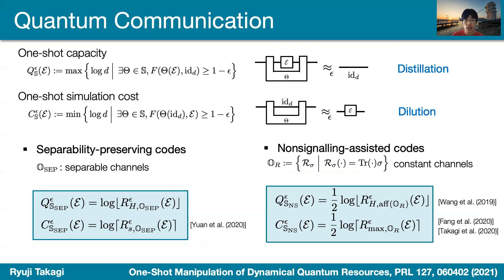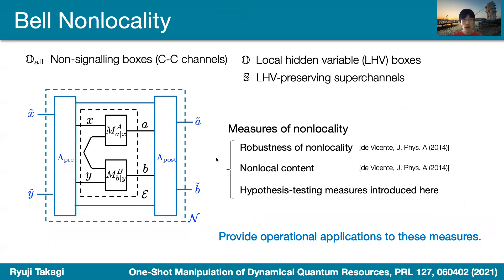Without giving the exact technical details, we can apply that to many situations such as quantum communications. In quantum communications, two figures of merit — the capacity and the estimation cost — are pretty important, and these can be encompassed by the distillation problem and the dilution problems. With this, we can apply our results to get exact characterization of these figures of merit for several coding schemes, such as entropy-preserving codes or no-signaling assisted codes. We can also apply that to locality by properly setting the set of channels of interest, free channels, and free super channels. Our general results can give operational interpretation to these measures in terms of resource transmissions, which was previously lacking.